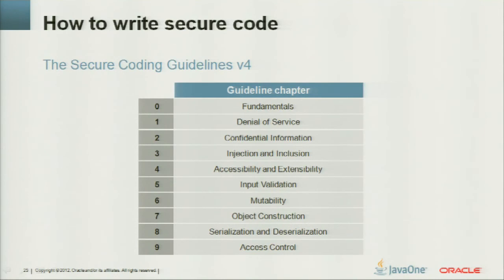How do the guidelines split up? First, the fundamentals. Then denial of service. Confidential information — addressing confidentiality impact. Then integrity: injection and inclusion; accessibility and extensibility; input validation — very important. Object states and mutability. The lifecycle, shown with object construction and serialization. And how to constrain code is shown in chapter 9.